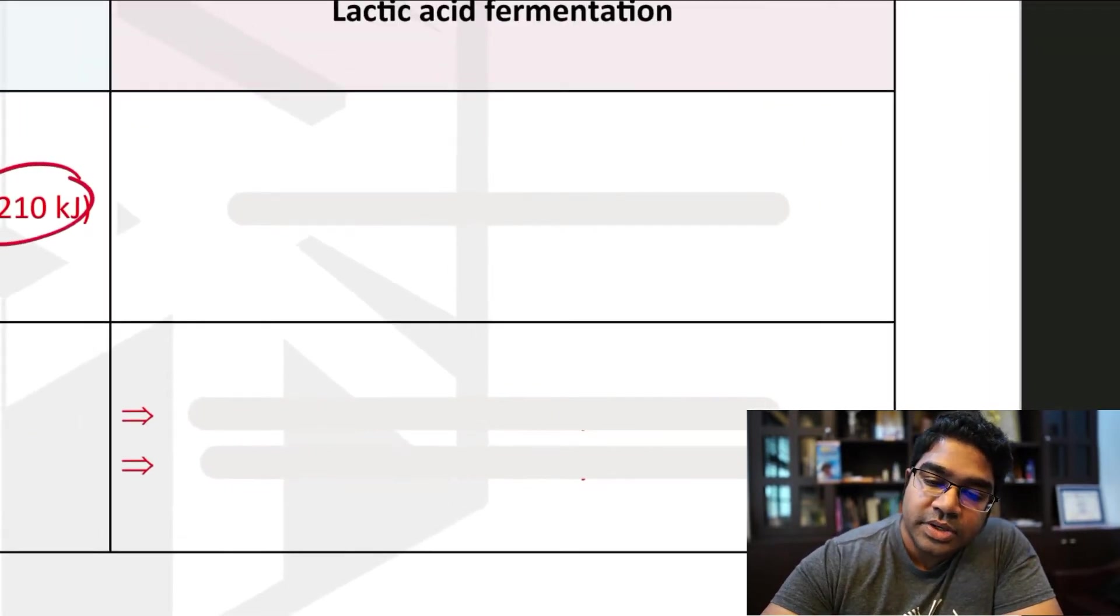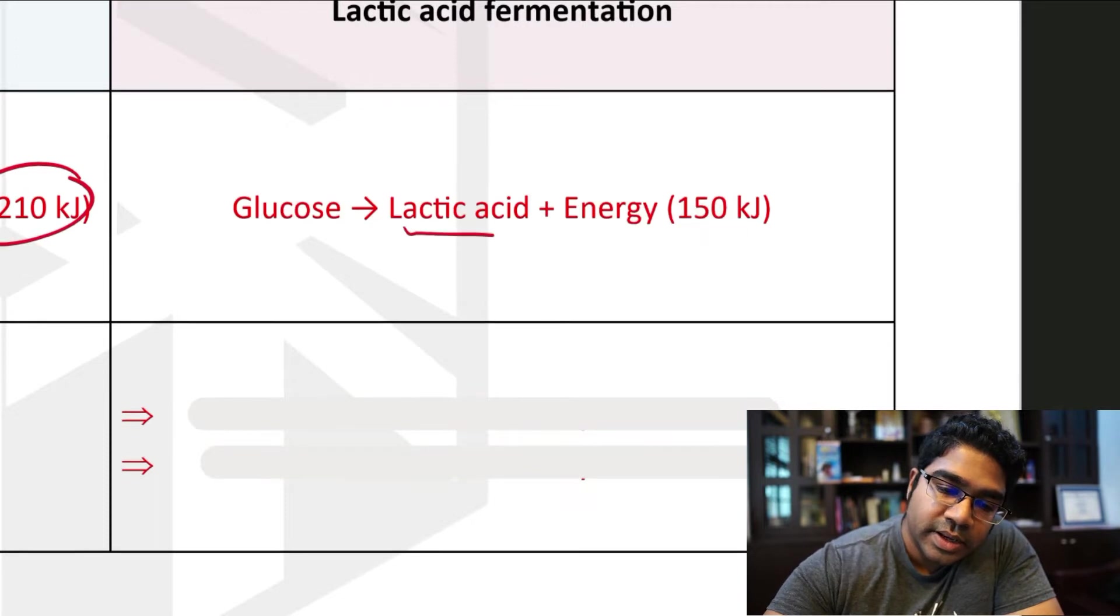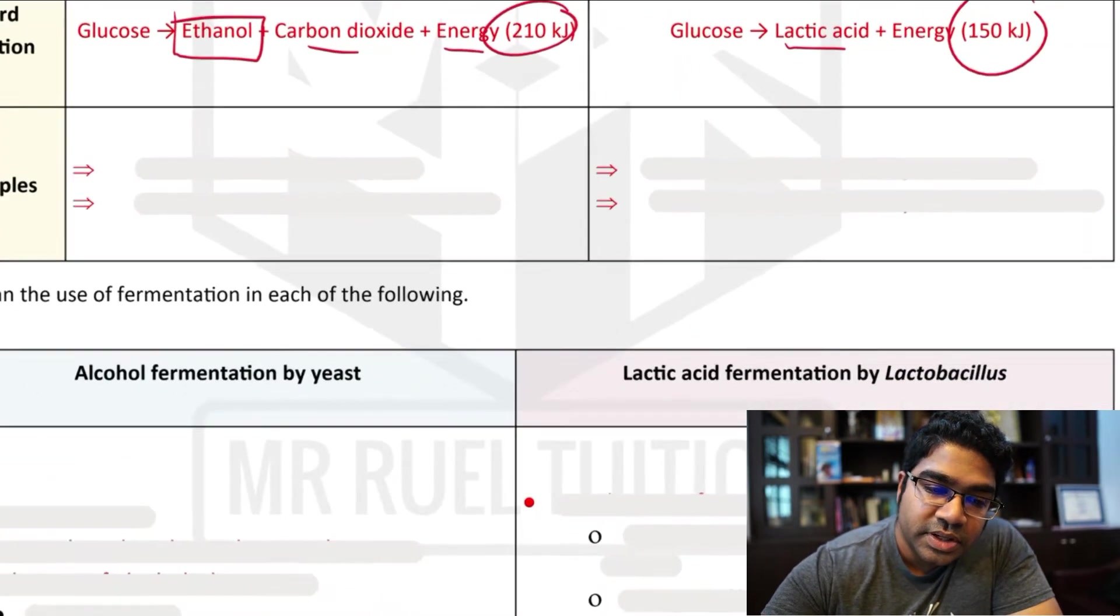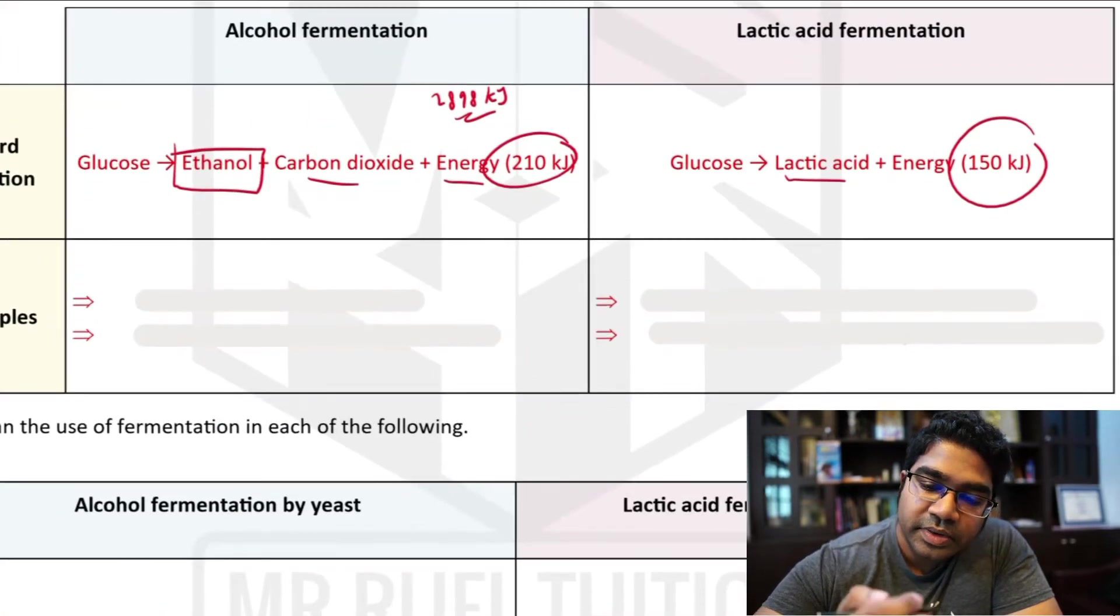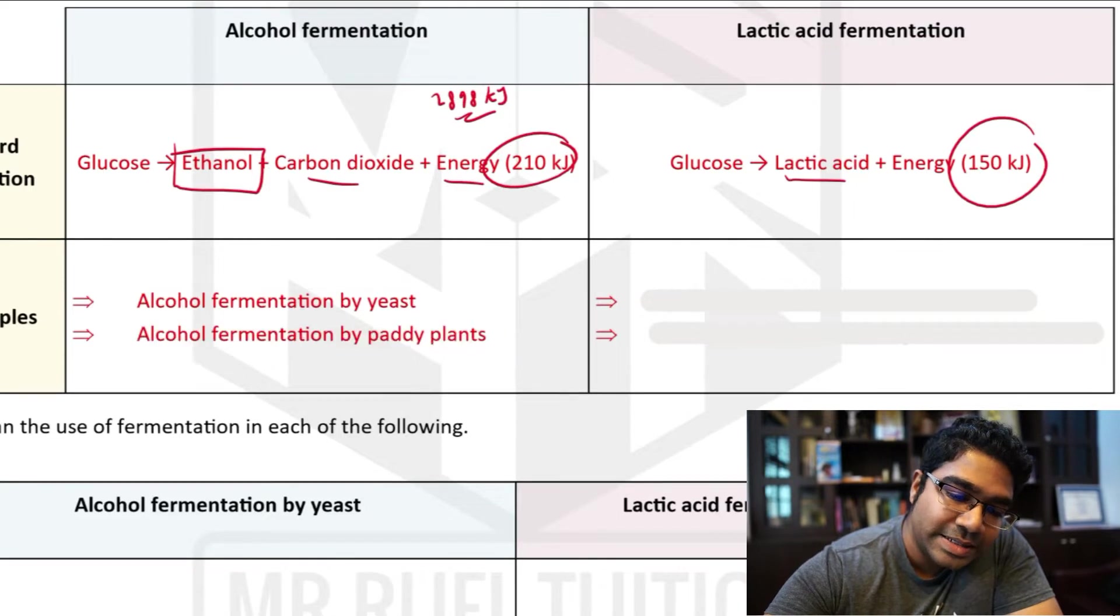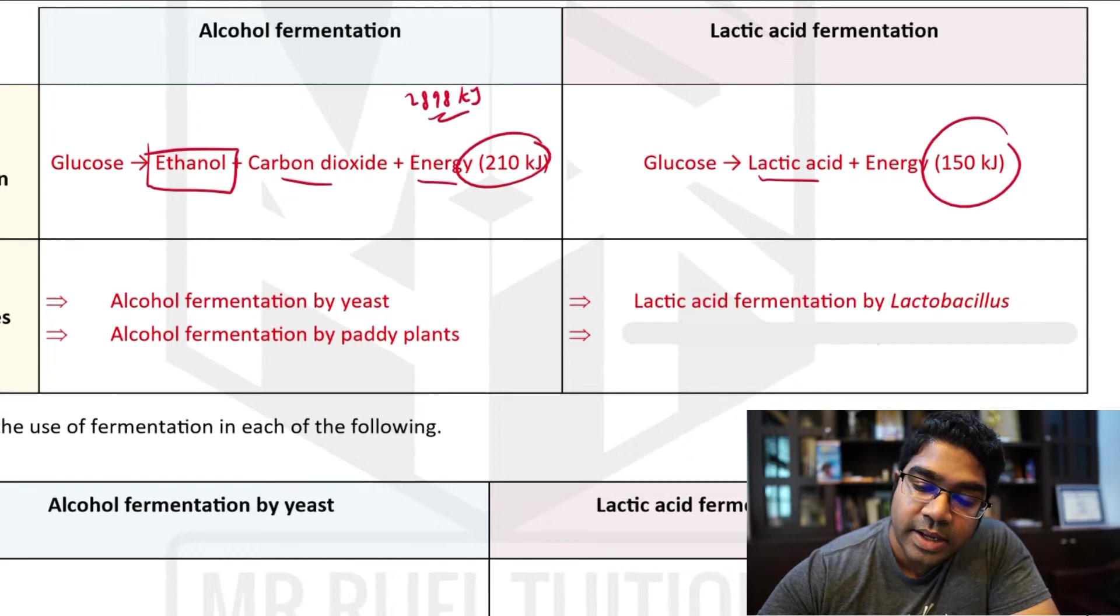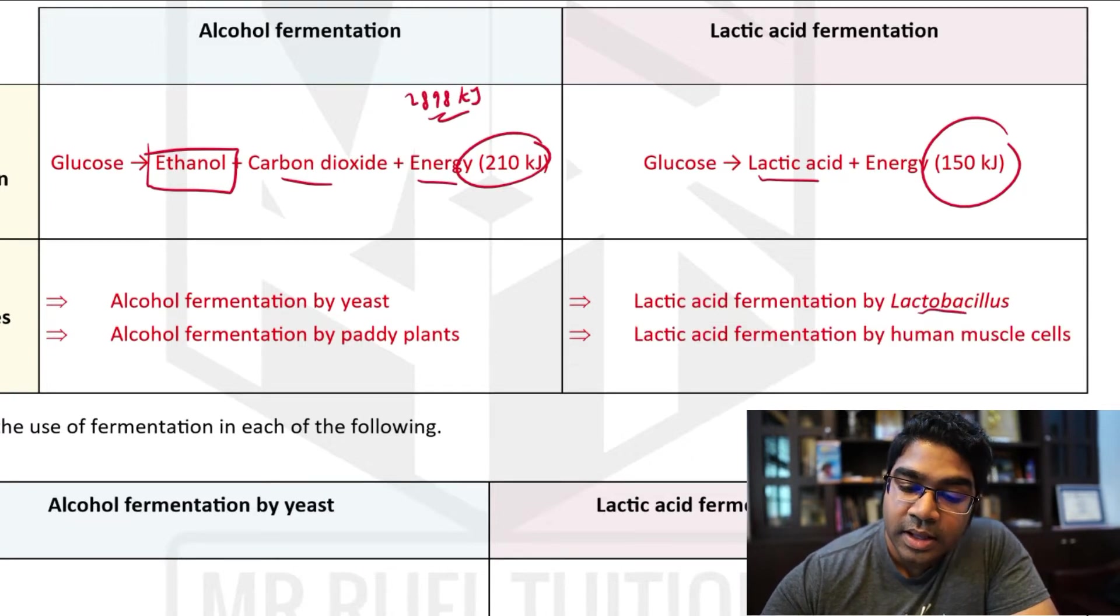And then in lactic acid fermentation, we only have one product that is lactic acid and the energy produced here is even less, only 150 kilojoules. The examples of these two respirations: alcohol respiration is done by yeast and by paddy plants whereas lactic acid fermentation is done by lactobacillus, the genus of bacteria, and by human muscle cells as well.